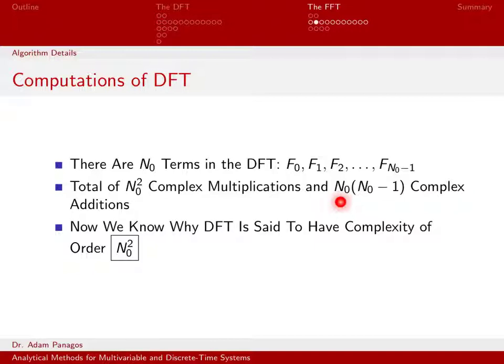Again, if you want to think of it as N0 squared multiplies and N0 squared additions for a total of 2 N0 squared, that's fine. But when we count order of operations, any leading factors like a 2, we don't care about that. What really matters is the N0 squared, because N0 is really large. If N0 is, say, a billion, 2 times a billion times a billion is basically still just a billion times a billion. We don't really care about the factor of 2. So this is why we say that the DFT has complexity on the order of N0 squared. So as N gets large, the number of operations goes up with the square of N.